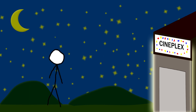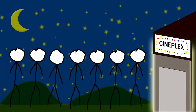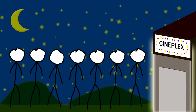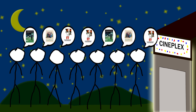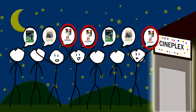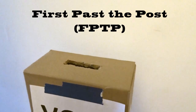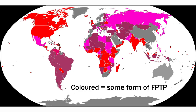It's Sunday night. You and your friends want to decide what movie to watch together. That's easy, right? Just ask everyone for their first choice, and the movie with the most first choices wins. This voting system, called First Past the Post or FPTP, is used in the majority of democratic countries including Canada, the US, and the UK.